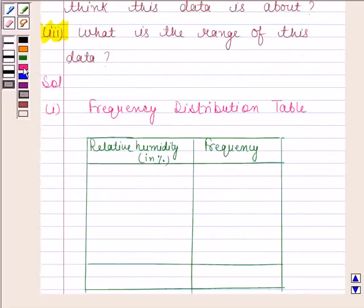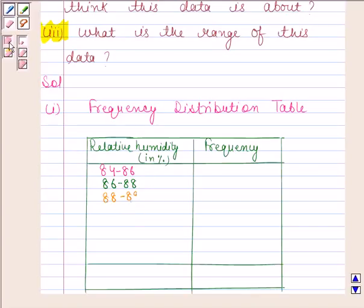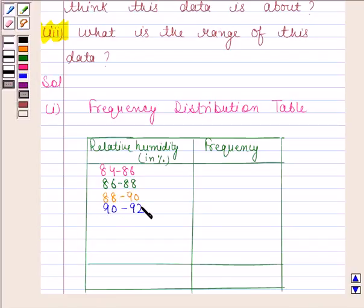So we take classes as 84 to 86, 86 to 88, 88 to 90, 90 to 92, 92 to 94, 94 to 96, 96 to 98, 98 to 100.